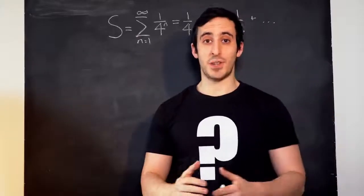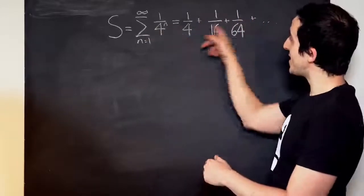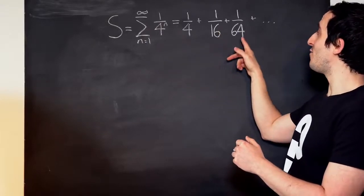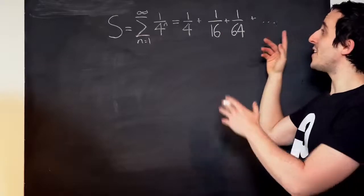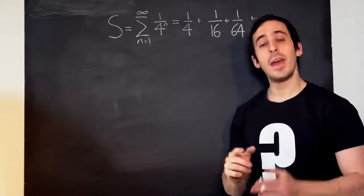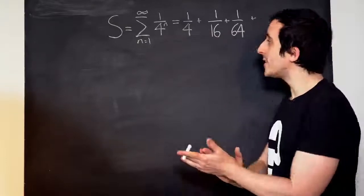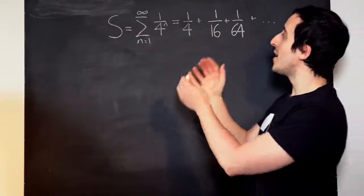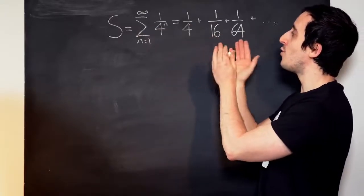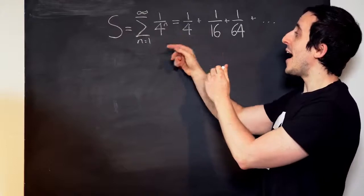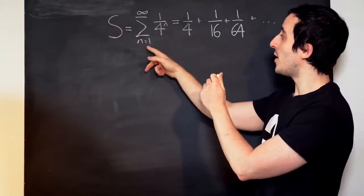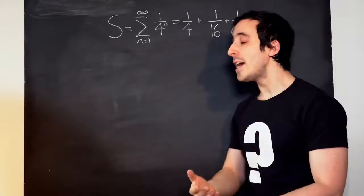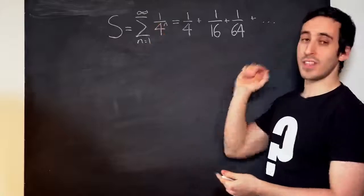Now, for our second picture proof, we're going to look at this sum up here. This sum is equal to a quarter plus a sixteenth plus a sixty-fourth plus dot dot dot, and there are an infinite number of terms in this sum. And what this sum actually is, is illustrated by this equation over here. So what we do is, for each term, we take one over four to the power of n. And for the first term, n equals one. And then for the second term, n equals two. And for the third term, n equals three. And so on and so on, until we have an infinite number of terms.